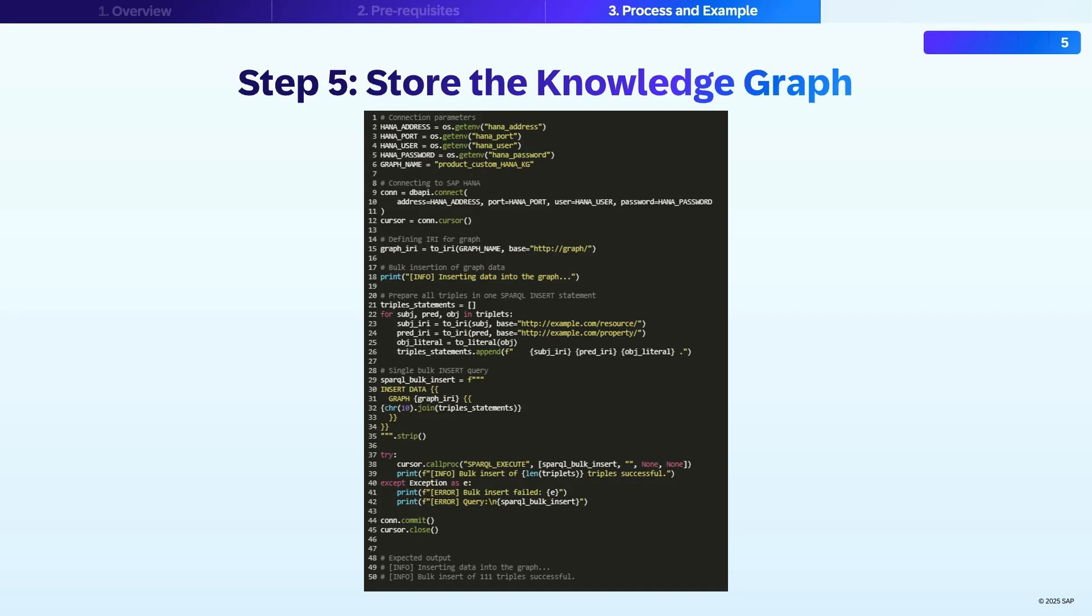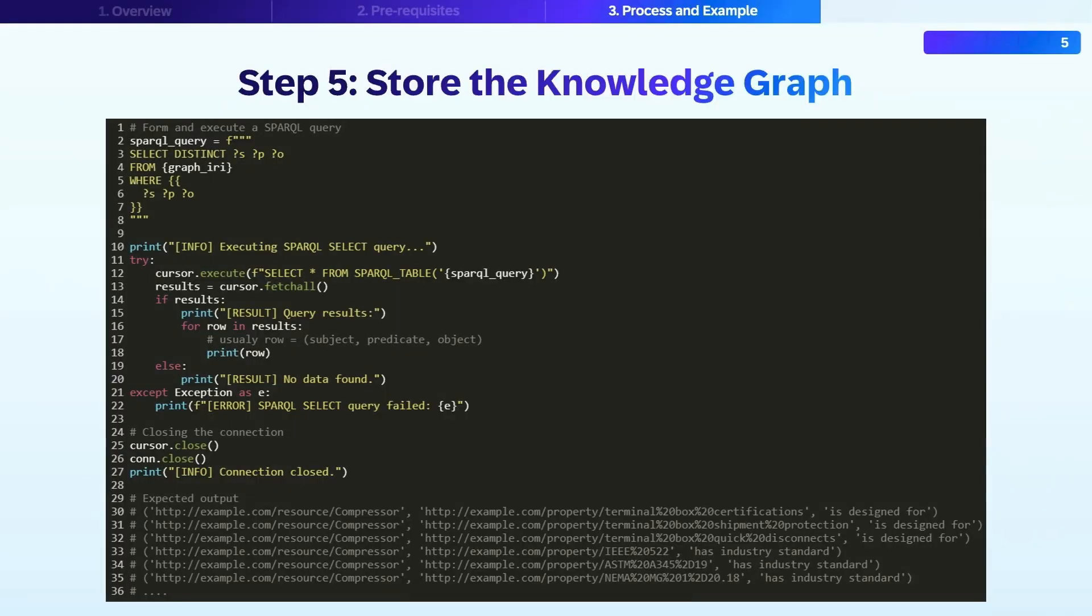The snippet connects to SAP HANA using environment variables for security. It creates an IRI for the knowledge subjects and predicates and formats each object as either an IRI if it represents an entity or as a literal if it's a value like text or a number. Then for each triple it creates and executes a SPARQL execute statement in bulk mode.